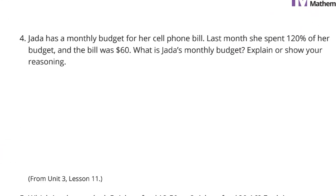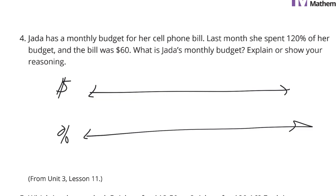Jada has a monthly budget for her cell phone bill. Last month, she spent 120% of her budget, and the bill was $60. What was Jada's monthly budget? Explain or show your reasoning. Love the number lines for these type of questions. On this number line, we can put our money. On this number line, we can put our percent. We always start with zeros.